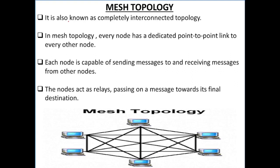Next we have mesh topology — it is also known as completely interconnected topology. In mesh topology, every node has a dedicated point-to-point link to every other node. Nodes are capable of sending and receiving messages from other nodes, and the nodes act as relays, passing on messages towards their final destination.